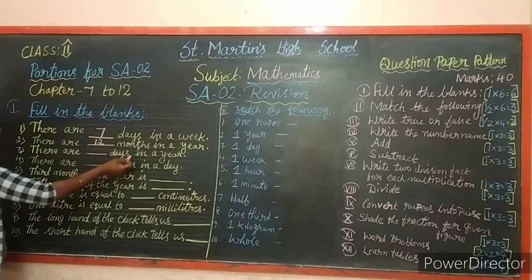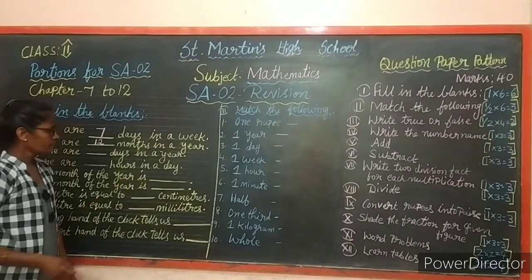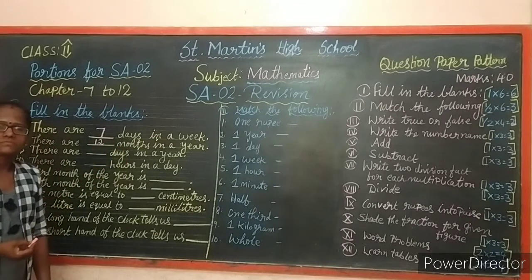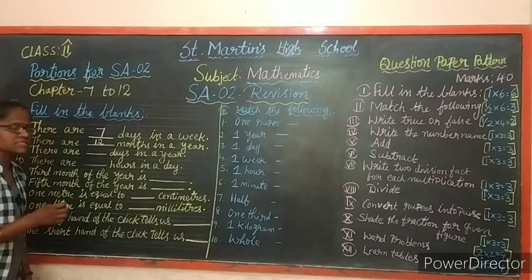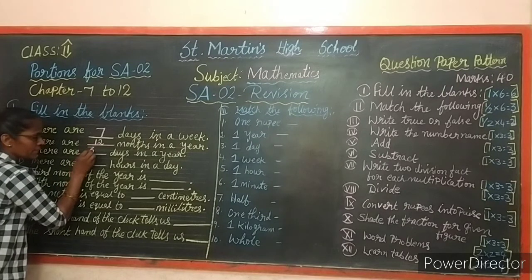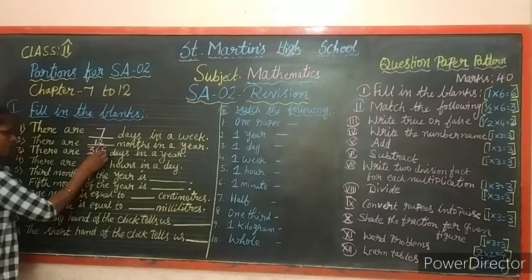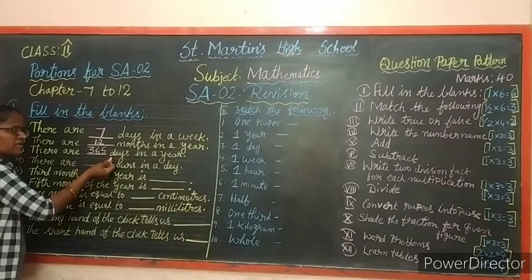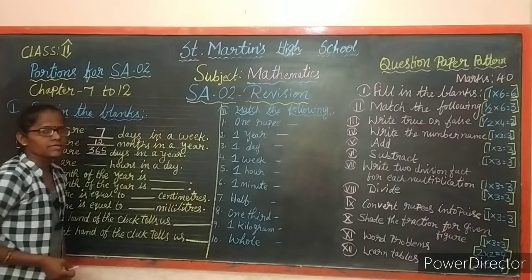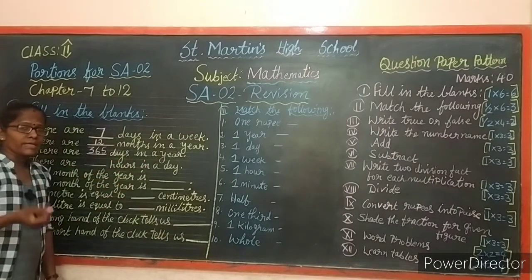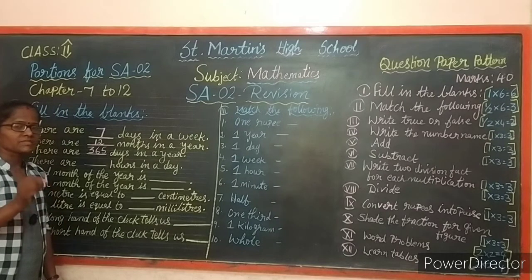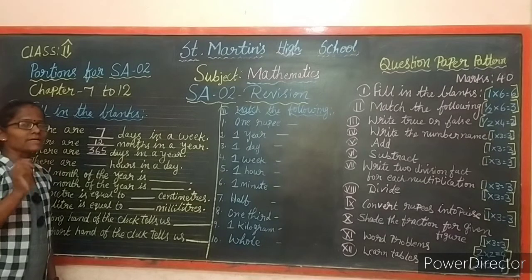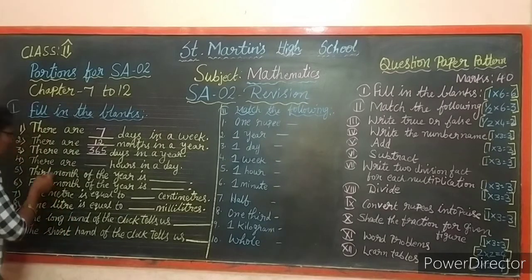Next: there are dash days in a year. How many days are there in a year? 365. There are 365 days in a year. If it is a leap year, there are 366 days, because February has 29 days in a leap year.